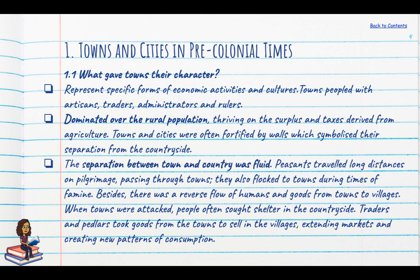Towns and cities were often fortified, symbolising a separation between the urban and rural sectors. But this separation was fairly fluid — peasants would travel long distances on pilgrimage, pass through towns, and flock to towns during famines. There was also a reverse flow when large-scale invasions occurred and city dwellers escaped into villages. Traders and peddlers would take goods from towns to sell in villages, extending markets and creating new patterns of consumption.